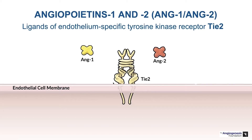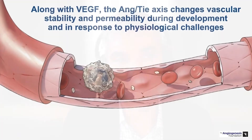Both angiopoietin 1 and angiopoietin 2 are potential ligands for the transmembrane endothelial-specific tyrosine kinase receptor TIE2. This receptor has both an extracellular domain and an intracellular domain, crossing the cell membrane. When angiopoietin 1 binds to this receptor, it causes intracellular signaling. Along with VEGF, the angiopoietin-TIE2 axis changes vascular stability and permeability during development and in response to physiologic challenges.